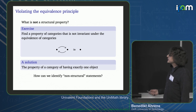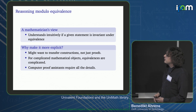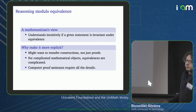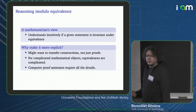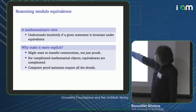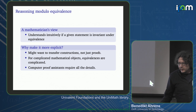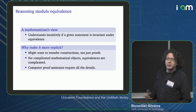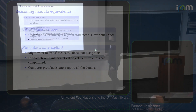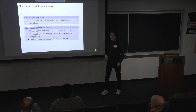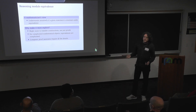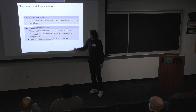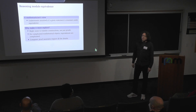How can we identify non-structural properties or statements? As a mathematician you might say you know what the interesting invariant properties are. But sometimes it would be good to make things more explicit. For instance, if we want to transfer constructions — and not just proofs — across an equivalence, then we need to ask not whether it transfers but how it transfers, which is much more complicated. Secondly, the notion of equivalence gets more complicated for higher categorical structures. And thirdly, we are all here to discuss machine-assisted proofs, and machines need all the details.